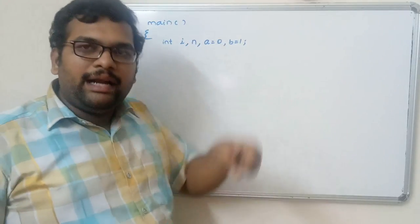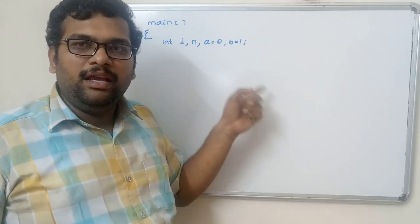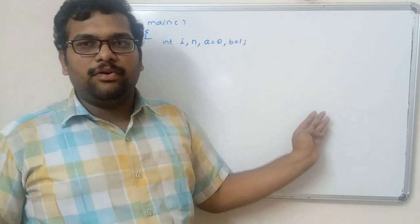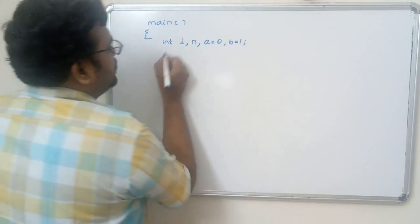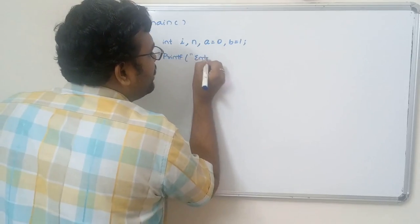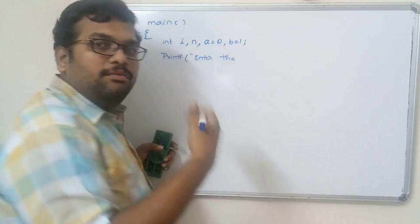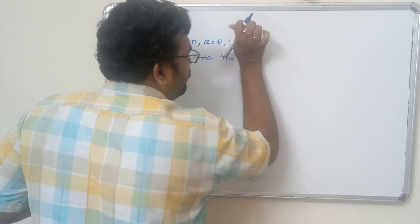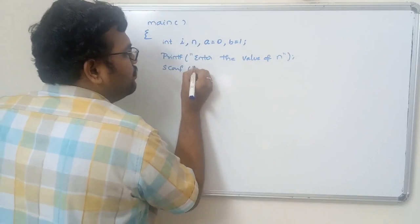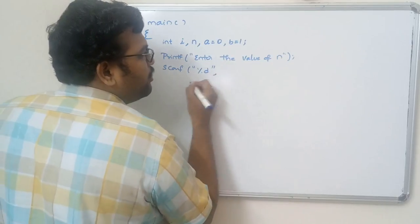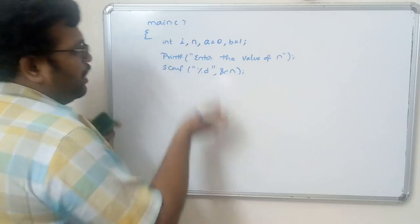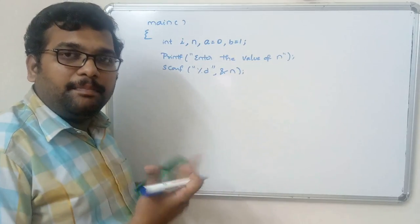I have taken the first two elements a and b. Now we need to read n using scanf with format specifier %d. This statement will get the value of n — how many numbers we want to print. We also need to print the first two elements before the loop.